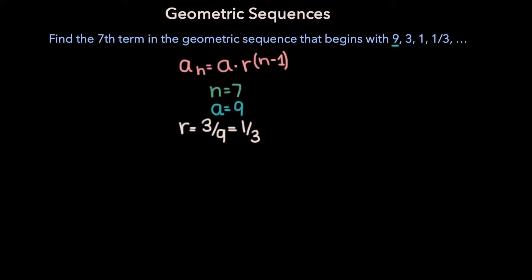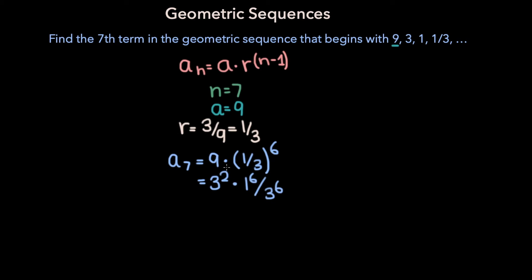And we know that this is correct, because if you take any term in the geometric sequence and multiply it by 1 third, you get the next term: 9 times 1 third is 3, 3 times 1 third is 1, and 1 times 1 third is 1 third. Now if we plug all this information into our formula, we get that a sub 7 is equal to a, which is 9, times r, which is 1 third, to the 7 minus 1, or sixth power. 9 is 3 squared, and 1 over 3 to the sixth power can be rewritten as 1 to the sixth power over 3 to the sixth power. We can cancel out a 3 squared in the numerator and denominator, and we're left with a sub 7 equal to 1 over 3 to the fourth, which is equal to 1 over 81. So the seventh term in this geometric sequence is 1 over 81.